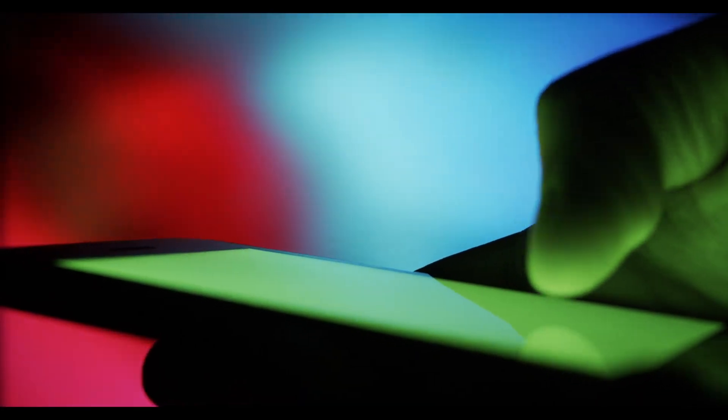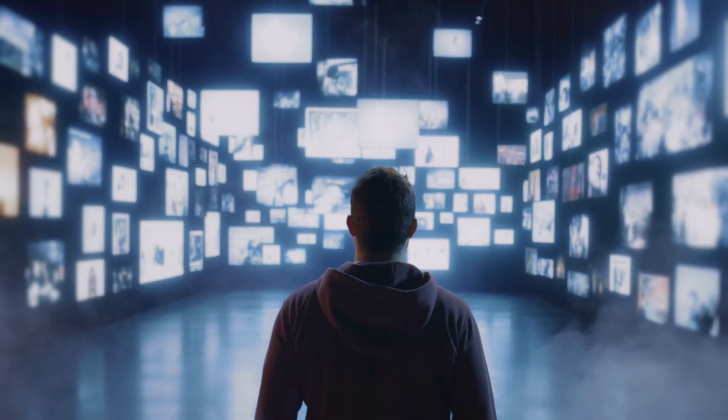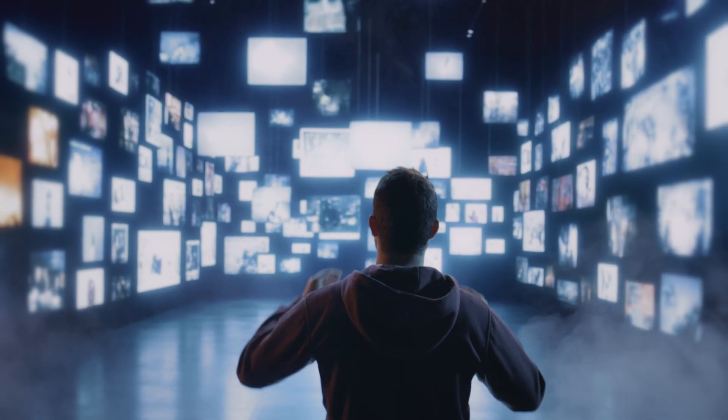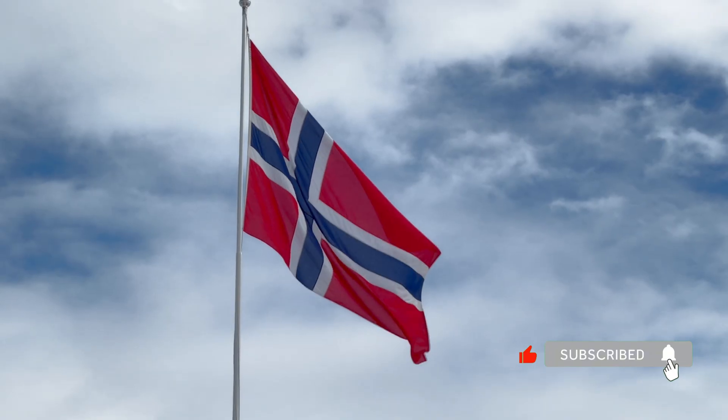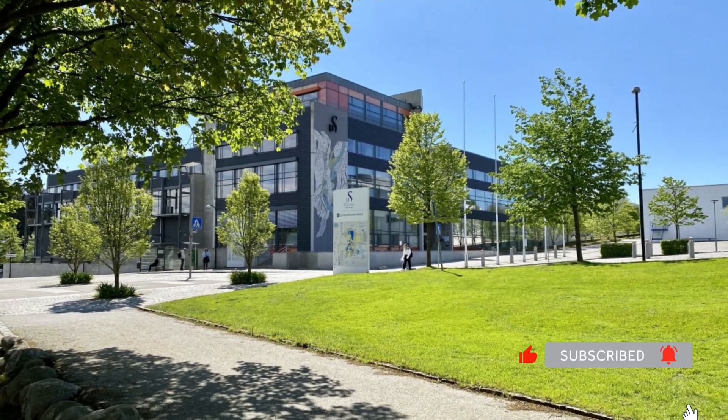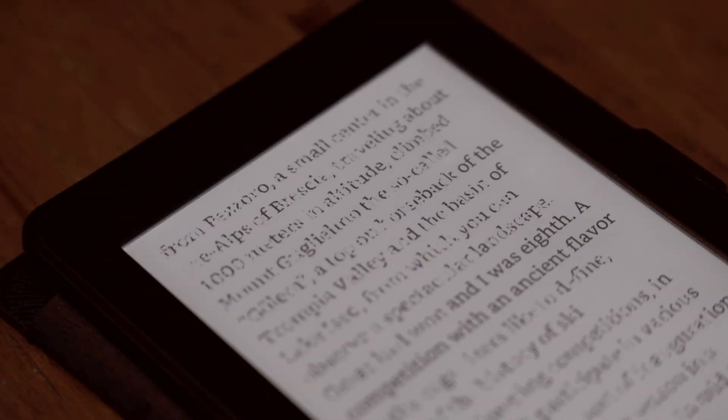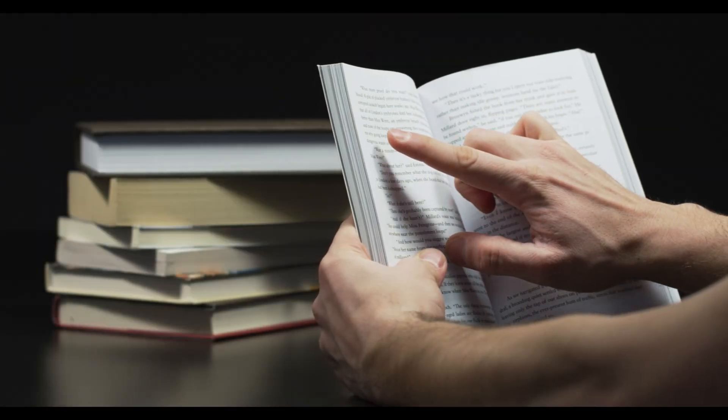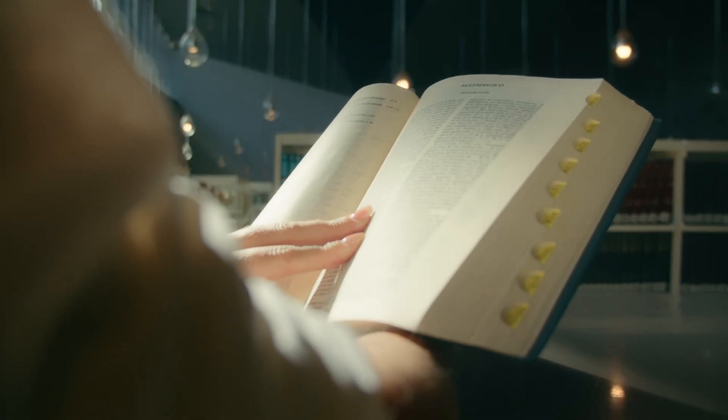Myth 4: Reading digital versus paper doesn't matter. Phones, PDFs, screens. All information, right? Words are words. Norway researchers found otherwise. University of Stavanger. Same story. One group reads on Kindle. One on paper. Paper readers scored 20-30% higher on comprehension and memory. Why?